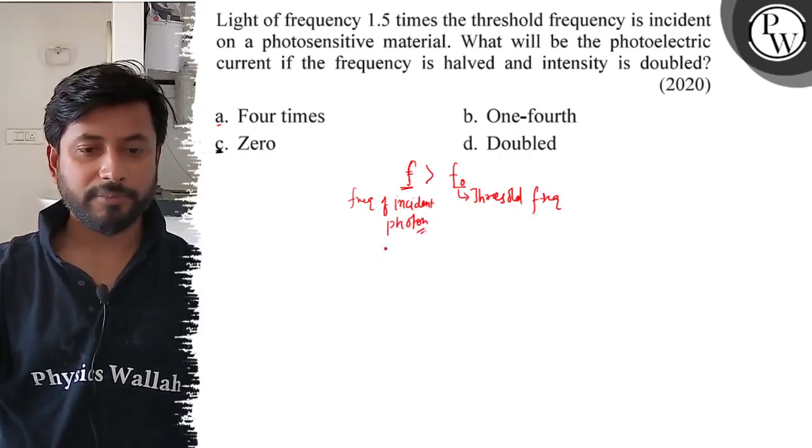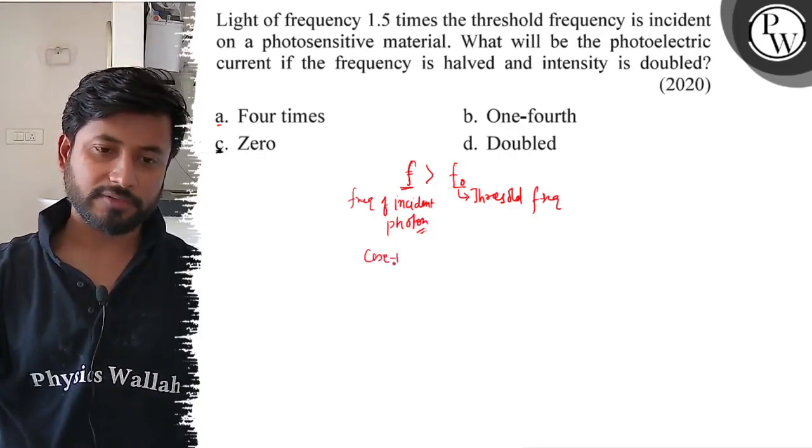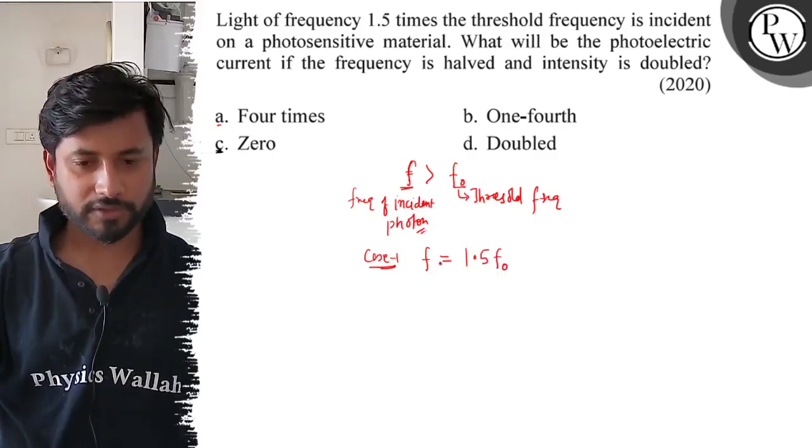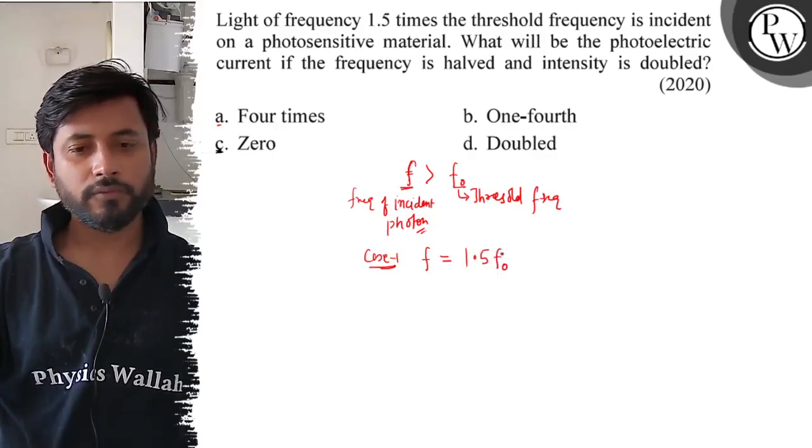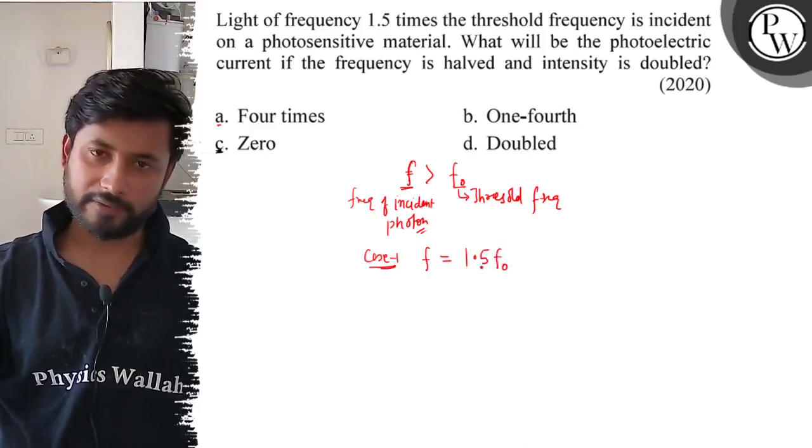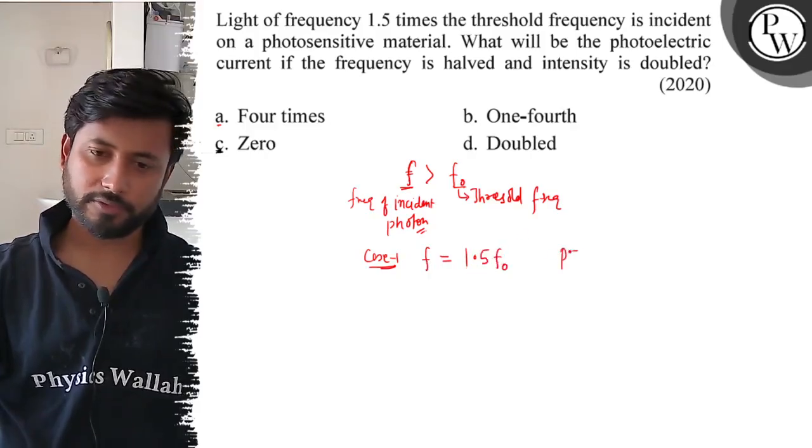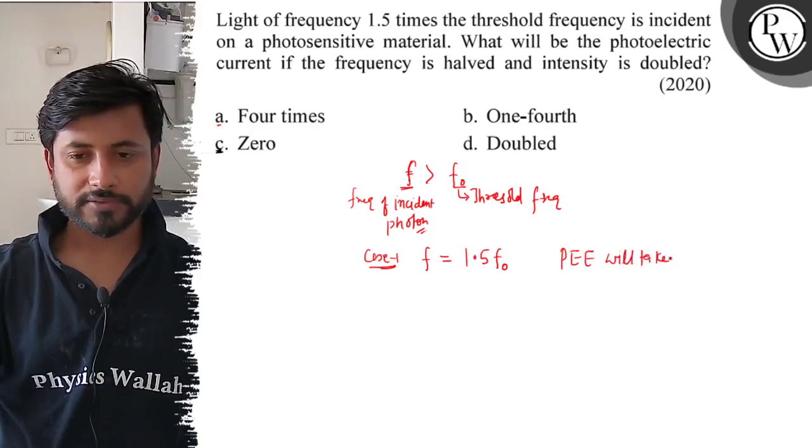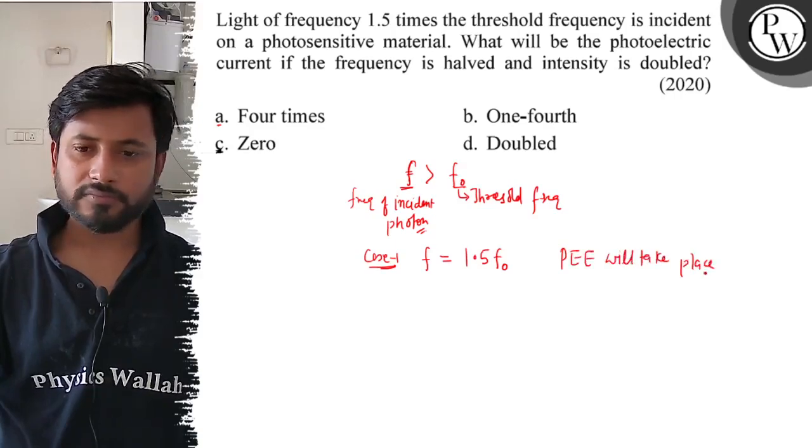Here is the first case. Initially, case 1: f equals to 1.5 f₀. So, the incident photon frequency is 1.5 times the threshold. So, the photo emission will take place, and photo current also.